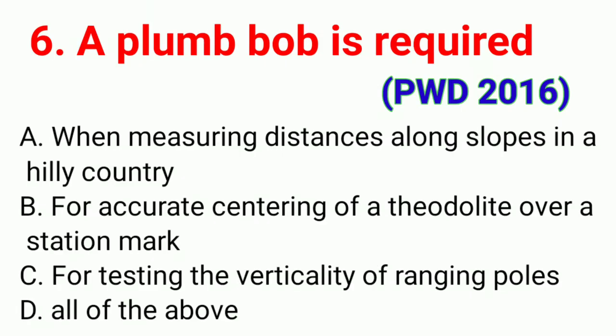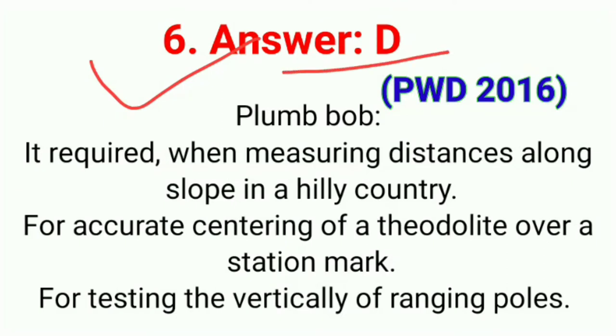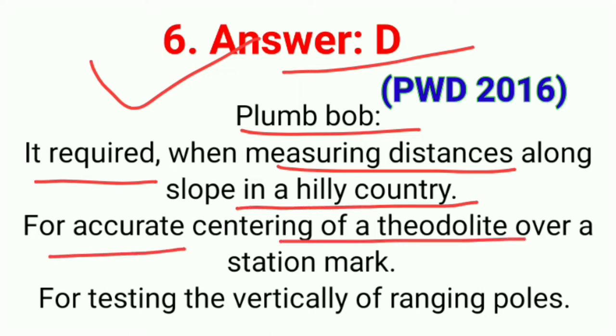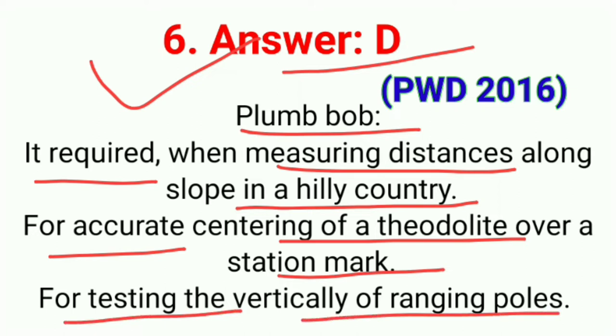Question number six: A plumb bob is required for. The correct answer is option D, all of the above. A plumb bob is required when measuring distance along a slope in hilly country, for accurate centering of a theodolite over a station mark, and for testing the verticality of ranging poles.